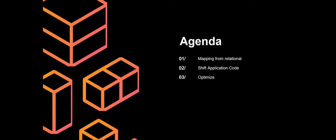We've got three steps to cover today. First, we'll look at how to map data from relational into Couchbase — thanks to some newer Couchbase features, this is relatively straightforward. Second, we're going to look at how to shift your application code over, and Couchbase is uniquely suited for this. Third, we'll look at optimizing — what we can do once we're in Couchbase to improve performance and make data access more efficient.